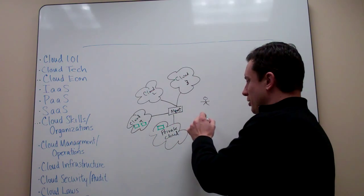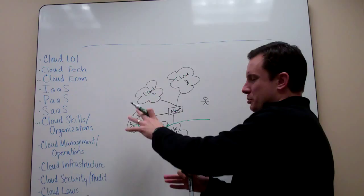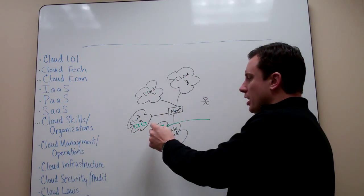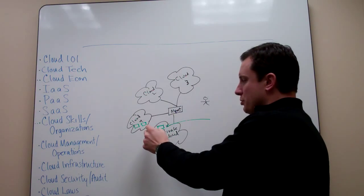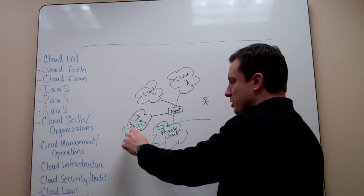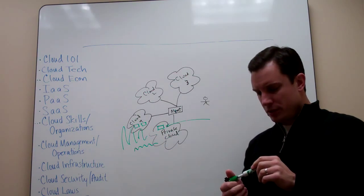Sometimes this gets misconstrued as a terminology called cloud bursting, where demand will come in for a while, and then magically these applications will just all move around. It's a little more complicated than that. But we do see companies that are saying I'd like to manage steady state within one cloud and deal with spikes within another cloud.